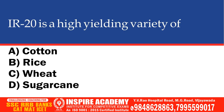Rice Aya 20 is a high-yielding variety of which crop? Options: Cotton, Rice, Wheat, Sugarcane. The correct option is Rice.